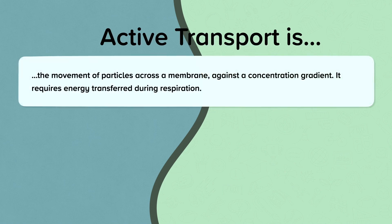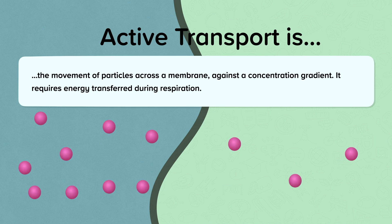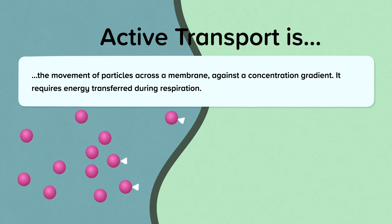Active transport is the movement of particles across a membrane against a concentration gradient. It requires energy transferred during respiration. In diffusion or osmosis, the net movement of particles would be out of the cell down the concentration gradient, but in active transport the particles are moved against the concentration gradient — from an area of low concentration to an area of high concentration. This allows vital nutrients to be absorbed even if there aren't very many of them in the environment.